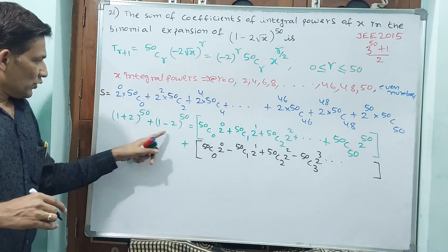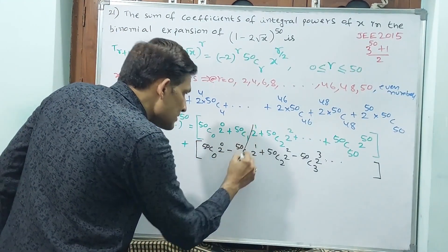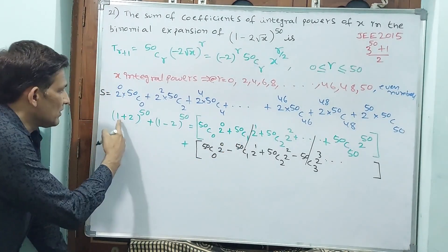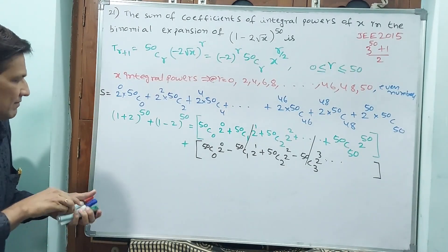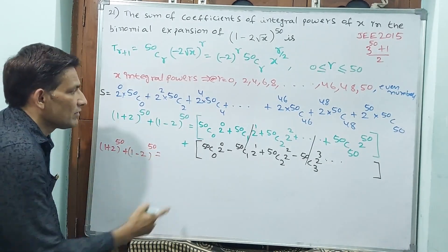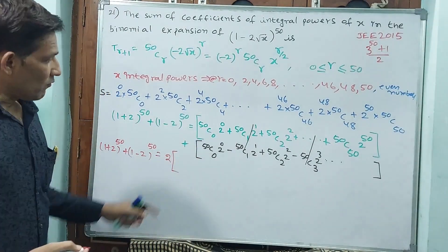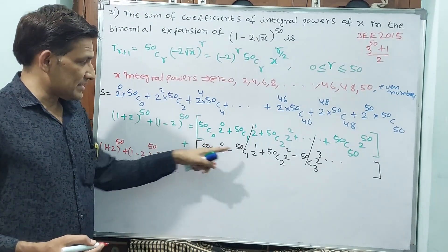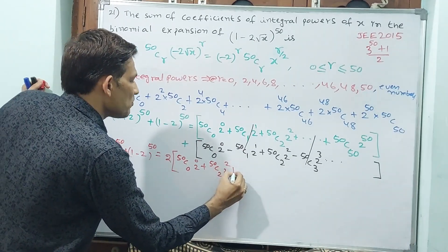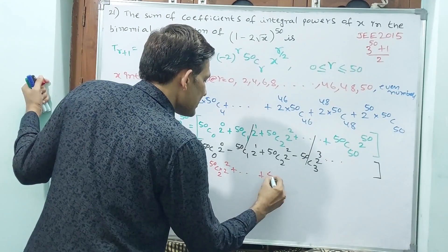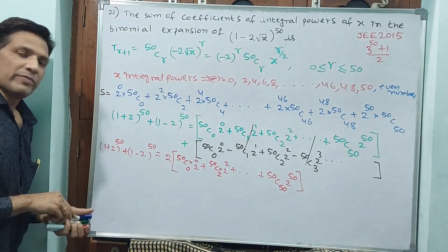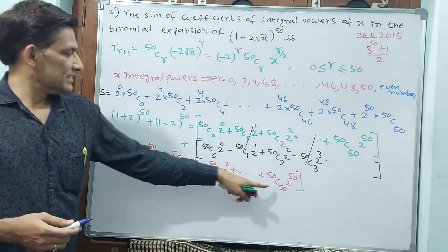When you add the two expansions, the odd-power terms cancel out. What remains is: (1 + 2)^50 + (1 − 2)^50 = 2 × (50C0 · 2^0 + 50C2 · 2^2 + 50C4 · 2^4 + ... + 50C50 · 2^50). This is exactly twice our required sum.